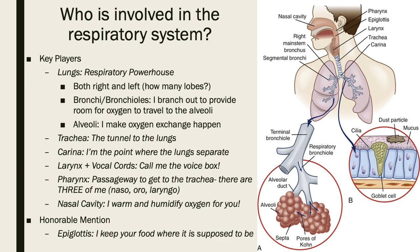Let's begin with who is involved in the respiratory system. There are lots of key players — effectively, lots of passageways that lead down into the lungs. We usually start with the nasal cavity, which serves an important role to not only warm oxygen but also humidify it. Some of us are mouth breathers, so our pharynx — whether our nasopharynx, oropharynx, or laryngopharynx — also provides a passageway for oxygen to get down to our lungs.